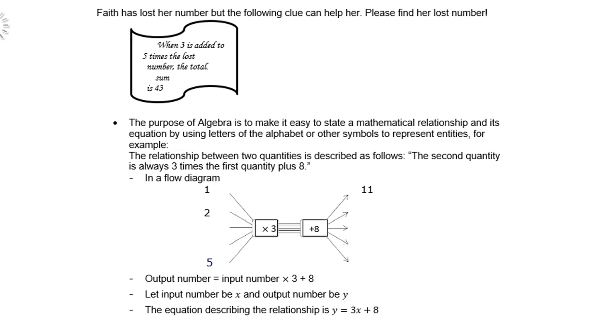Example: Faith has lost her number, but the following clue can help her. Please find her lost number. Now the clue is: when 3 is added to 5 times the lost number, the total sum is 43.